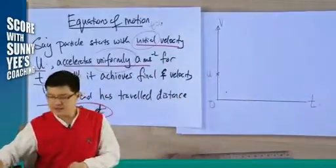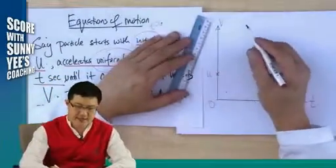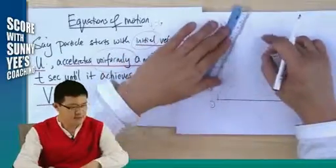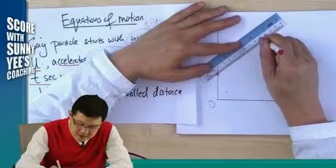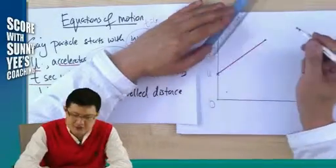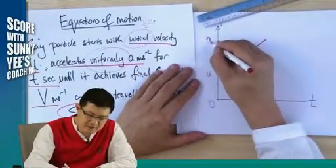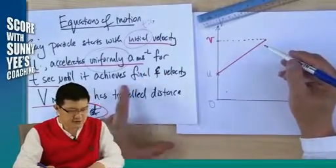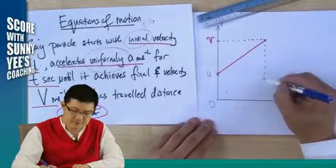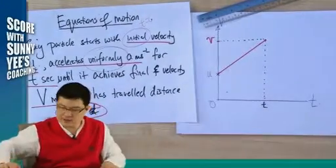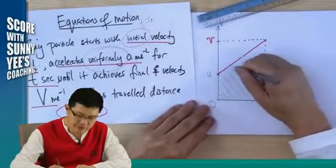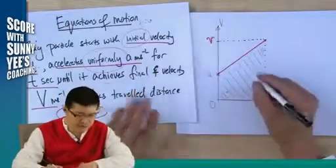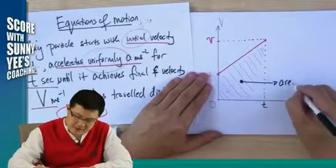It accelerates uniformly. Remember, if the gradient is a straight line, it means constant acceleration — increasing constantly with uniform acceleration until it achieves a final velocity V. And all this happens in T seconds. The total distance travelled is S, and that will be the area. The area gives us S, the total displacement.